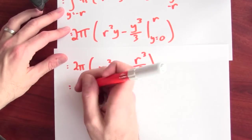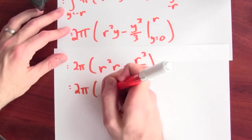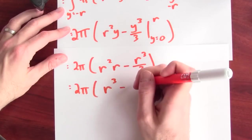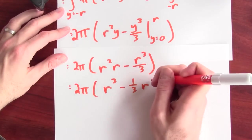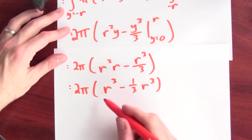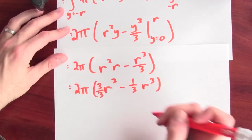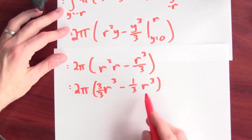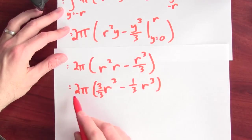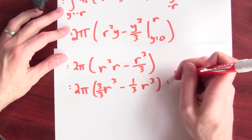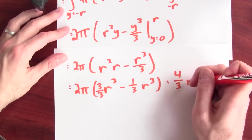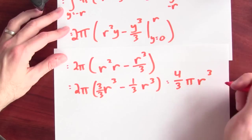And I can keep working on this. What do I have here? I've got 2 pi r cubed minus 1 third r cubed. Well, let's call this 3 thirds r cubed. So, this is now 2 thirds r cubed times 2 pi. Well, this ends up being 4 thirds pi r cubed.